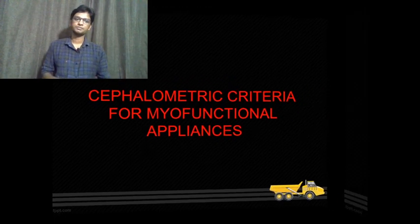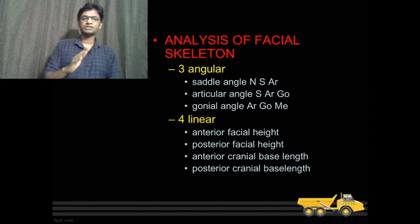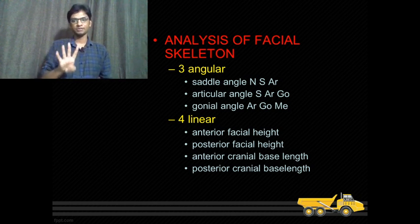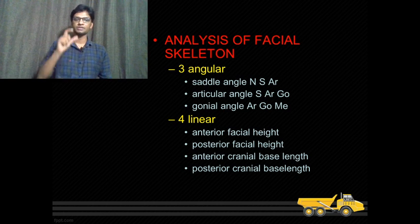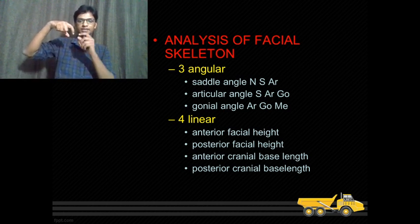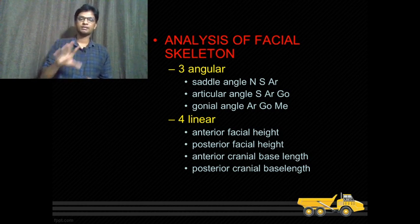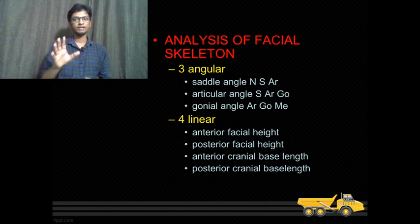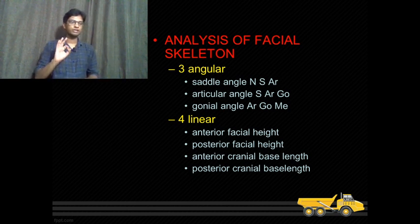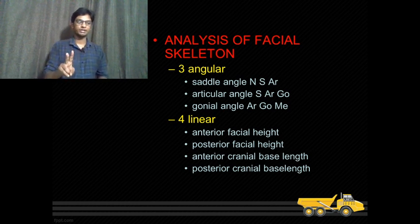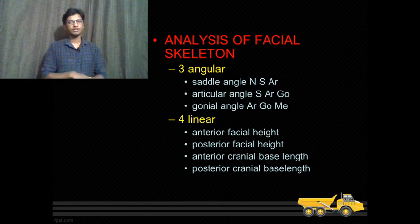For the cephalometric criteria of myofunctional appliances, the analysis of the facial skeleton involves three angular measurements and four linear measurements. Angular measurements use a protractor to measure angles, and linear measurements use a ruler or scale. The three angular measurements are the saddle angle, the articular angle, and the gonial angle. The four linear measurements are the anterior facial height, posterior facial height, anterior cranial base length, and posterior cranial base length.